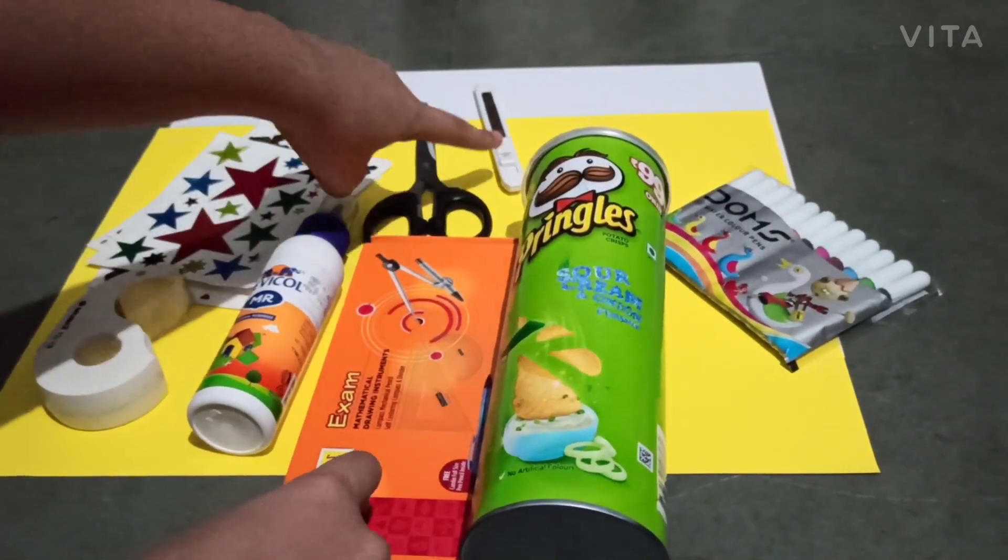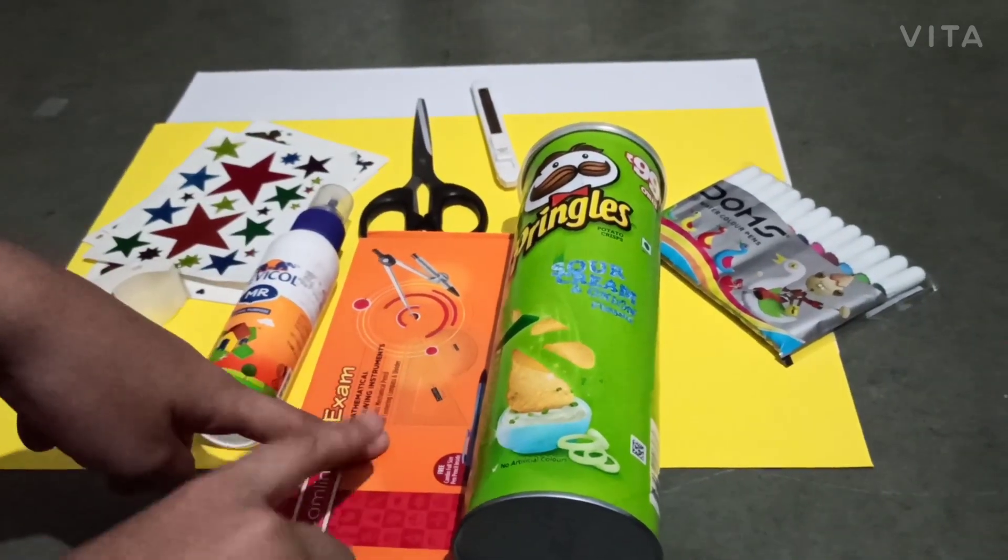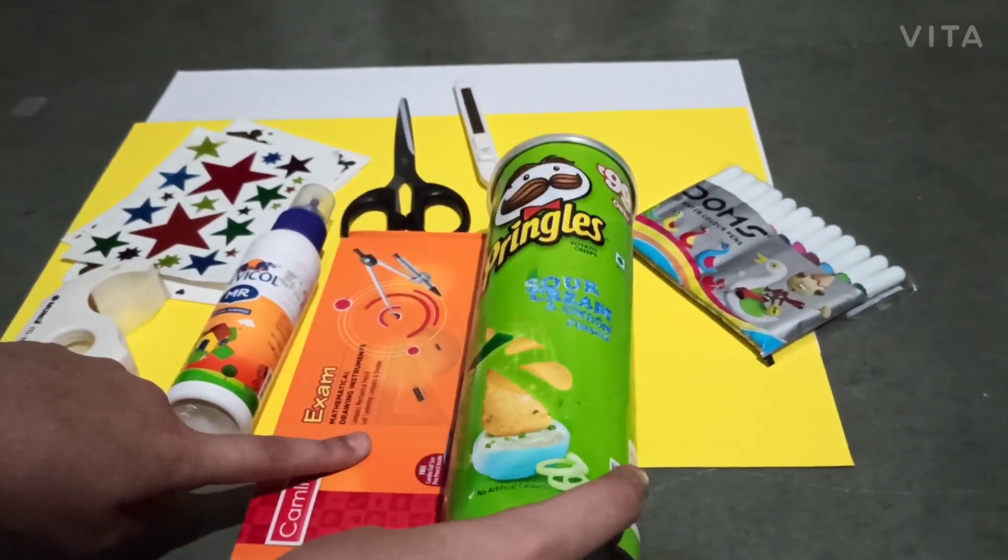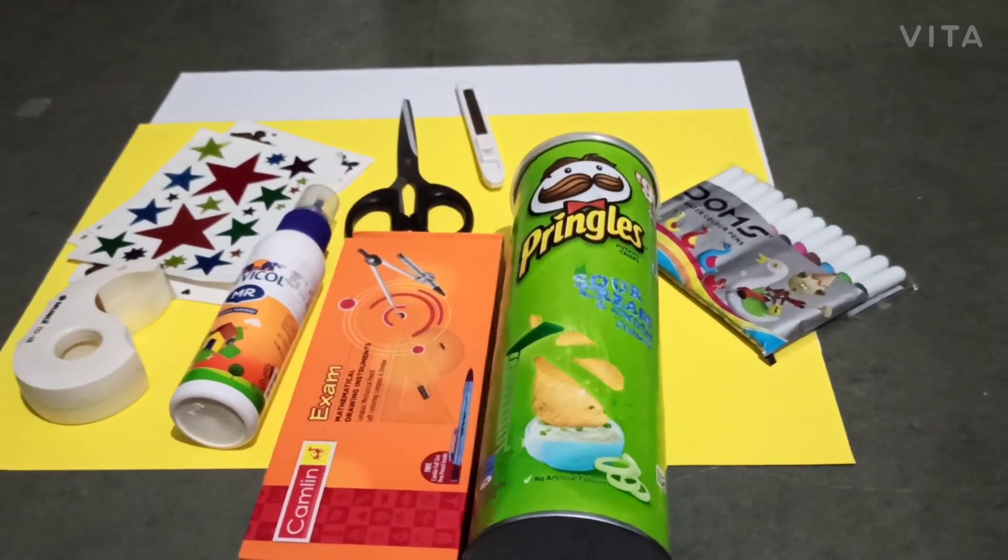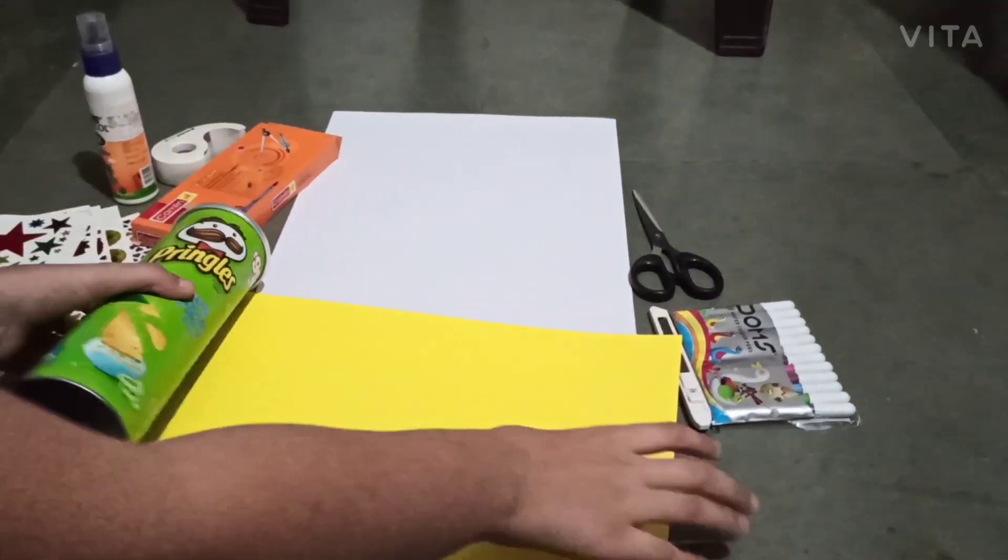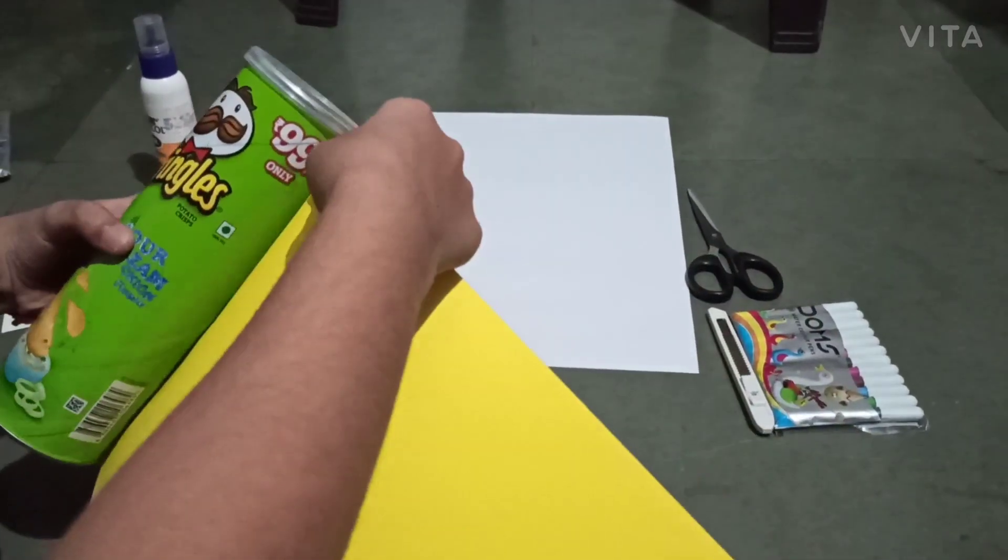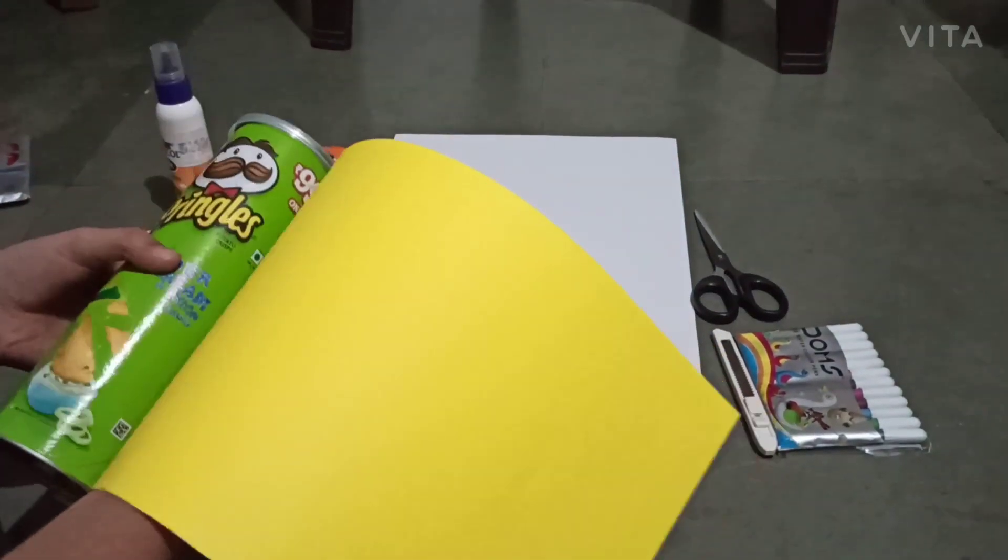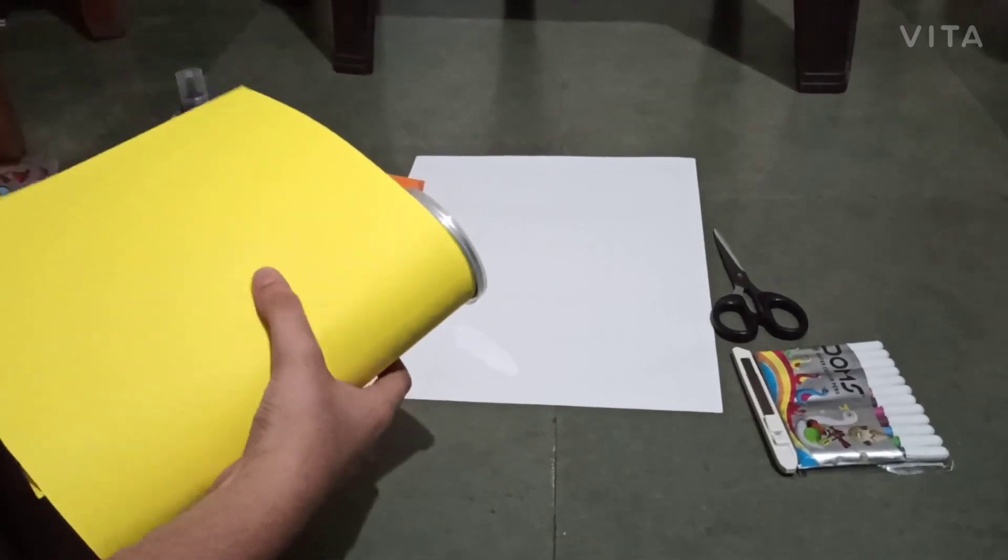Now we have to take this paper and just circle it like this. It does not look good, that is why we have to cover it with the paper. So nicely do it.